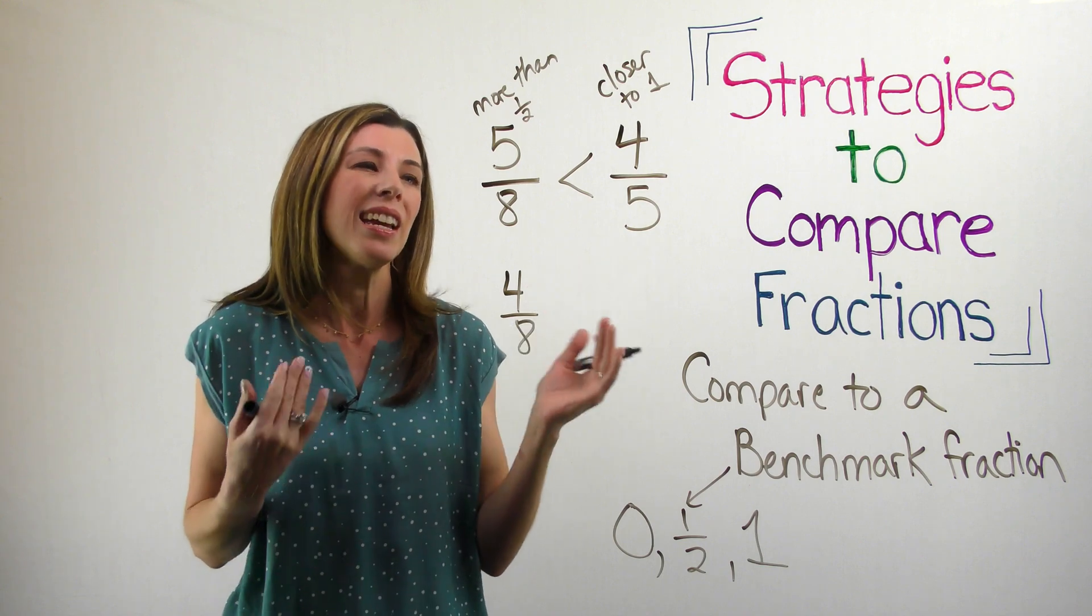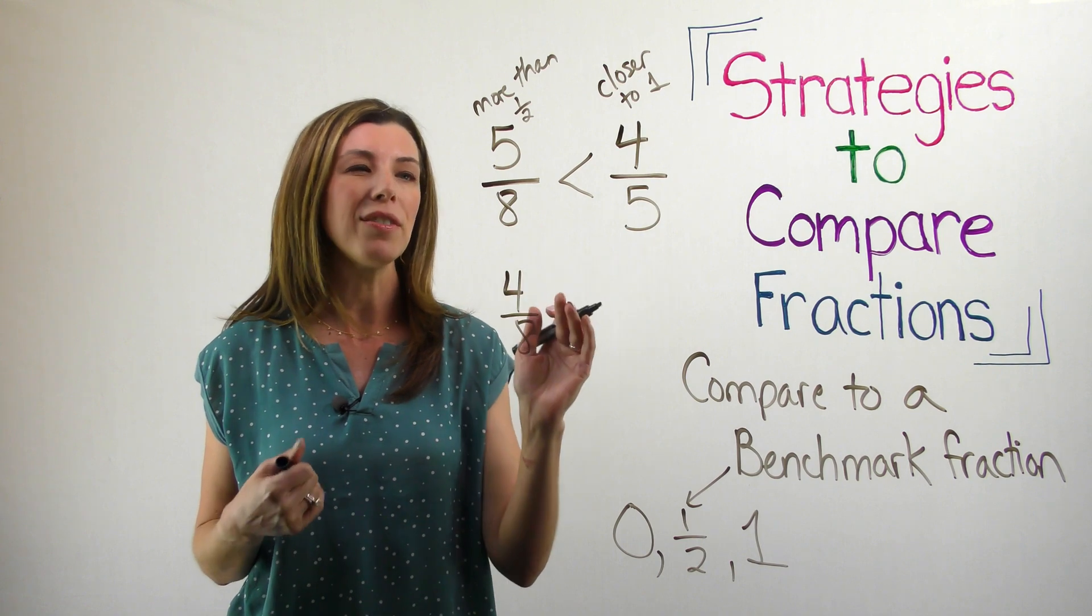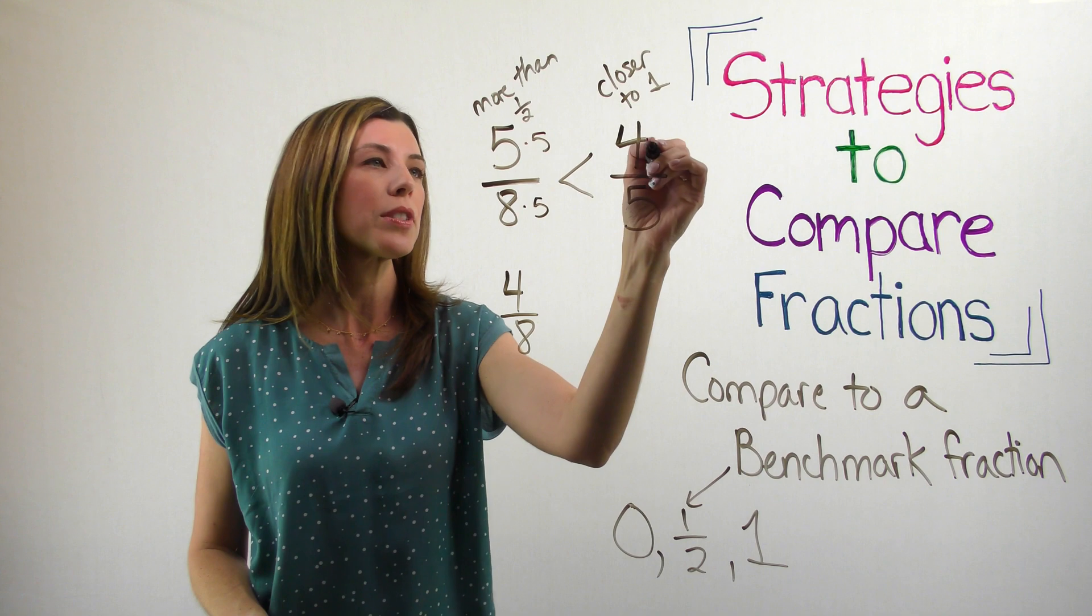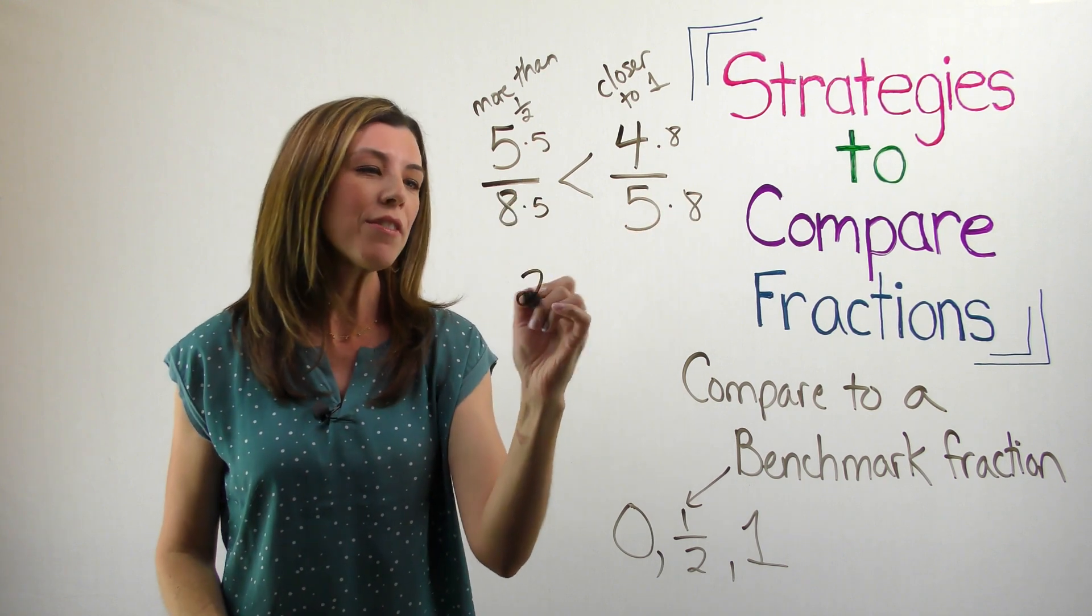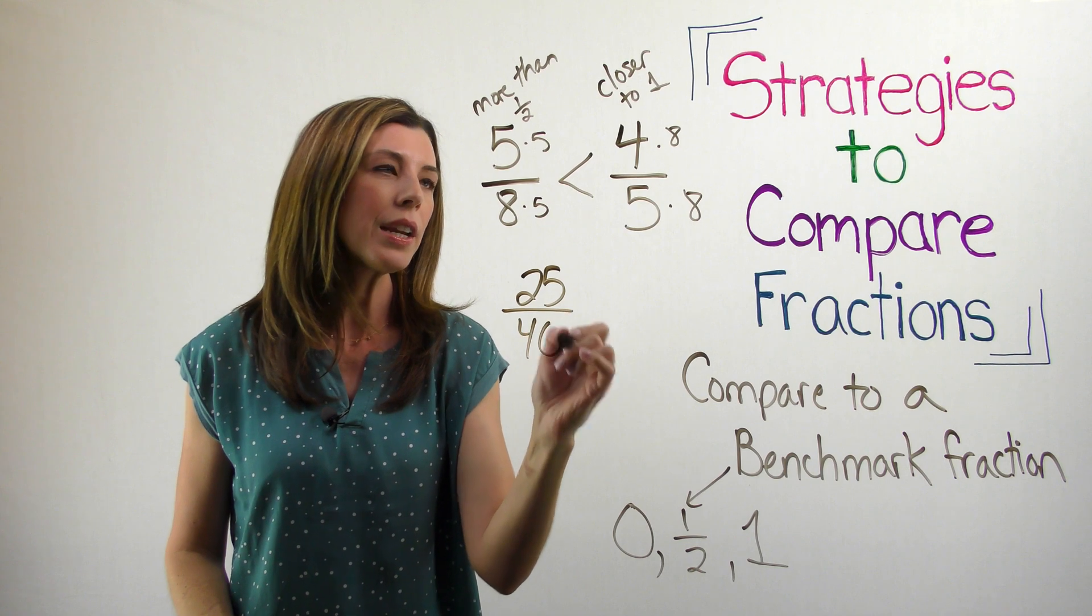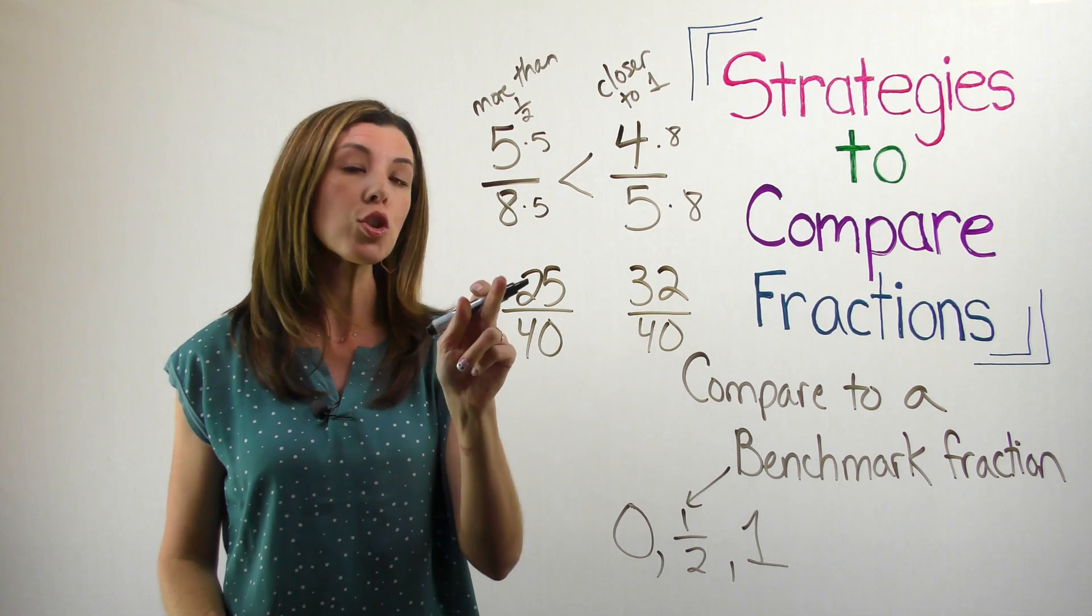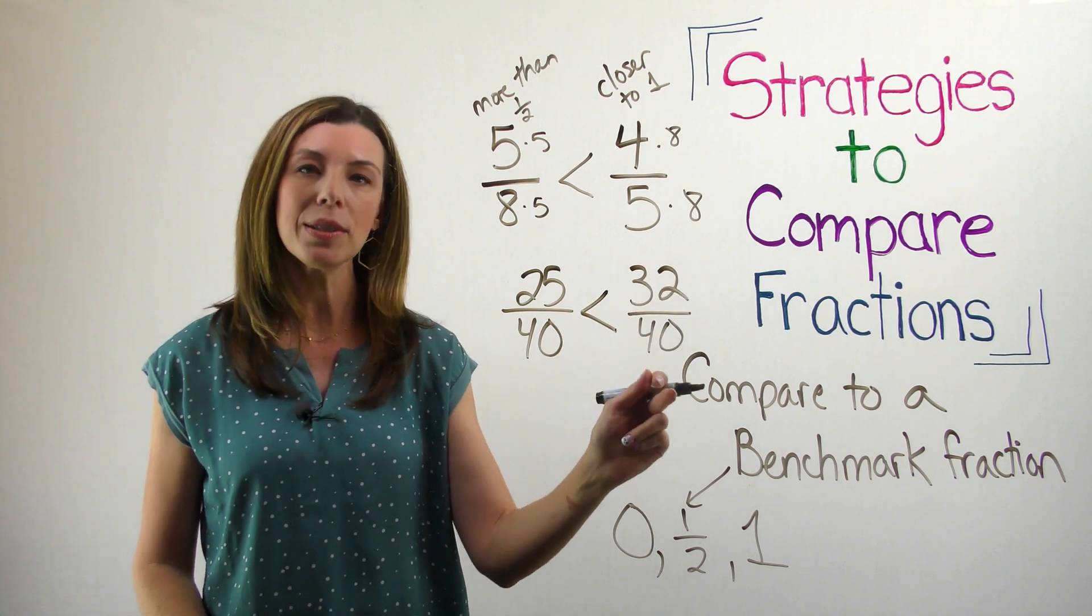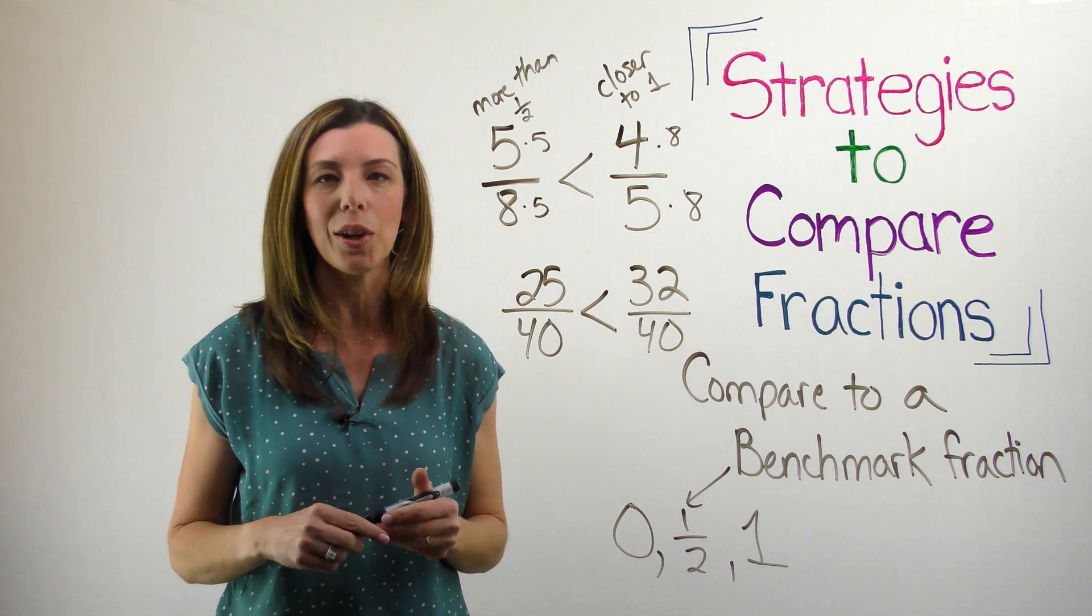So common denominators in this case, easiest thing, the least common multiple of eight and five is going to be 40, right? So I'm going to go ahead and just make myself some equivalent fractions here so that I can see. Now, I've got 25 over 40 and 32 over 40. I can see that 25 copies of one-fortieth is less than 32 copies of one-fortieth. Therefore, I know that I'm correct. Four-fifths was larger.